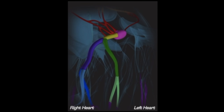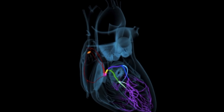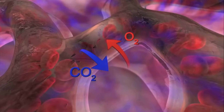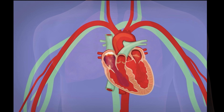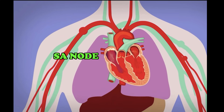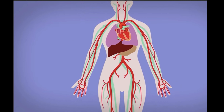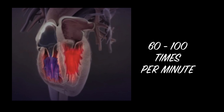When the SA node fires an impulse, electrical activity spreads through the right and left atria, causing them to contract and force blood into the ventricles. The lungs give the blood a new supply of oxygen and breathe out carbon dioxide as a waste product. When the SA node is directing the heart's electrical activity, this is called normal sinus rhythm — about 60 to 100 beats per minute at rest.